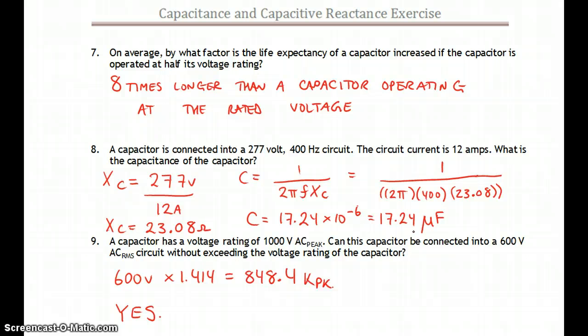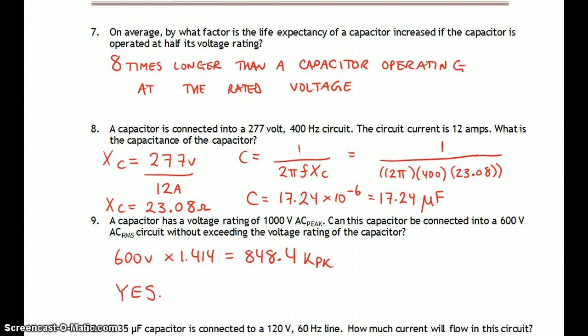Number nine. The capacitor has a voltage rating of 1,000 volts peak. And can you put it into a 600 volt RMS circuit? Well, we know that 600 volts times 1.414 gives the 848 volts peak. So it looks like we're good to go there. We're well within the range of 1,000 volts.